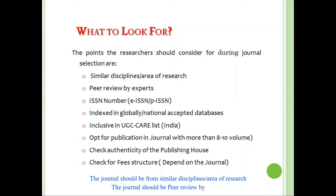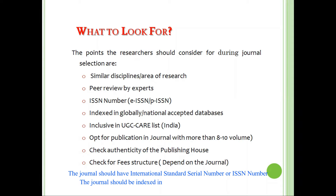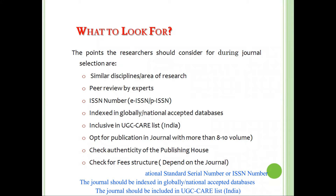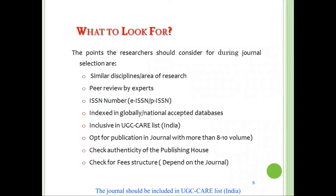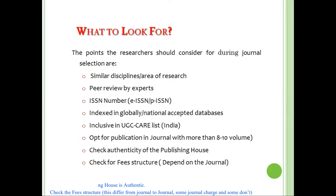First, let's see what points the researcher should consider during journal selection. The journal should be from a similar discipline or area of research. The journal should be peer-reviewed by experts. The journal should have an international standard serial number, or ISSN number, both electronic and printed version. The journal should be indexed in a globally or nationally accepted database. The journal should be included in the UGC care list if you are from India. Opt for journals with more than 8 to 10 volumes, check for the authenticity of the publishing house, and check for the fee structure as this differs from journal to journal — some charge and some don't.